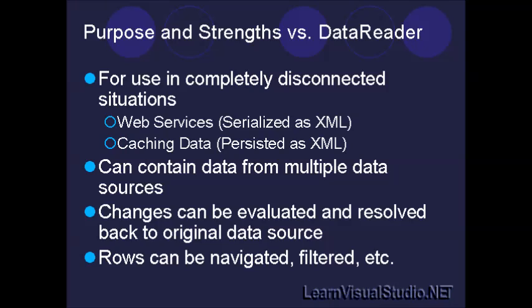One of the first things I want to talk about are data sets and the differences between them and data readers. From previous videos, we talked about data readers as being connected to a data source, and therefore you can grab data out of them very quickly and iterate through each of the rows sequentially. You can't go back — you can only go forward — and that's a very quick way of getting data from a database into your application. If you want to iterate through it, you'd have to save it off into an array or some type of collection. Data readers are also known as firehose connections to the database because they're so fast.